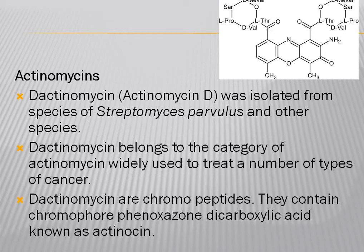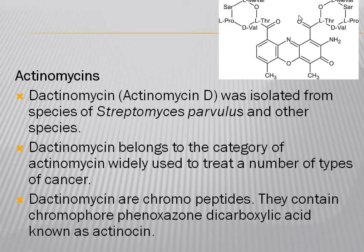The second class of antibiotics is the actinomycins. Dactinomycin is an anti-cancer antibiotic also known as actinomycin D, isolated from Streptomyces parvullus. It is widely used to treat a number of cancer types. Dactinomycins are chromopeptides containing the chromophore phenoxazone dicarboxylic acid, known as the actinocin ring system. Rings A, B, and C of this system together form the phenoxazone ring.